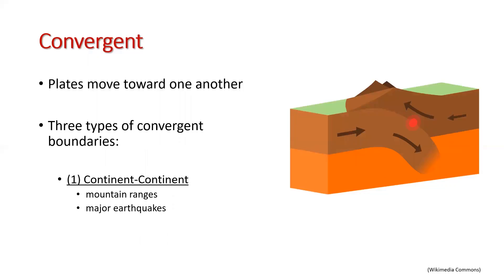The next type of boundary is convergent boundary. A convergent boundary is where plates are moving toward one another. We further divide convergent boundaries into three subgroups based on the types of lithosphere or plates interacting at those boundaries.